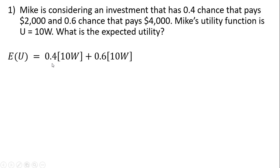The expected utility is going to be 0.4 times 10 times W plus 0.6 times 10 times W. This 10 times W is just the utility function, and the 0.4 and 0.6 refer to the probability of either getting $2,000 or $4,000.